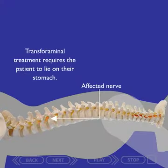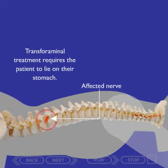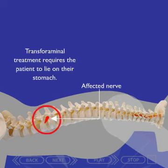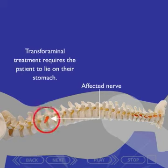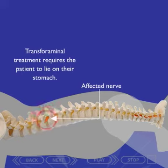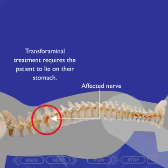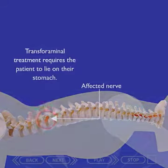The transforaminal approach requires fluoroscopic guidance to assist in the precise placement of the steroid solution onto the affected nerve roots. The patient is brought to the fluoroscopy room and asked to lie on their stomach. After identification of the affected nerve root level, these areas are marked and then cleaned.